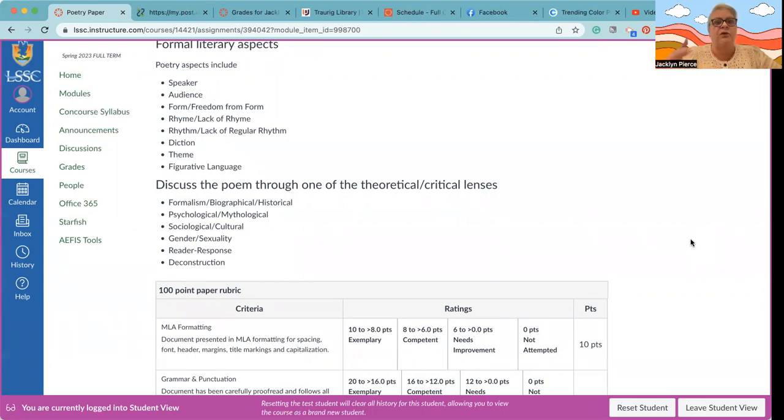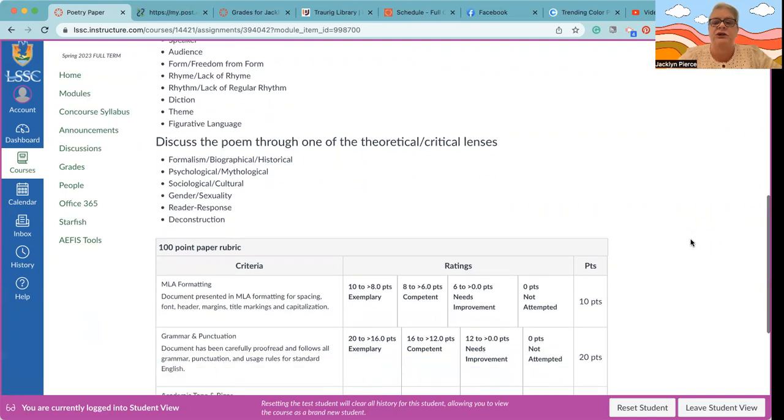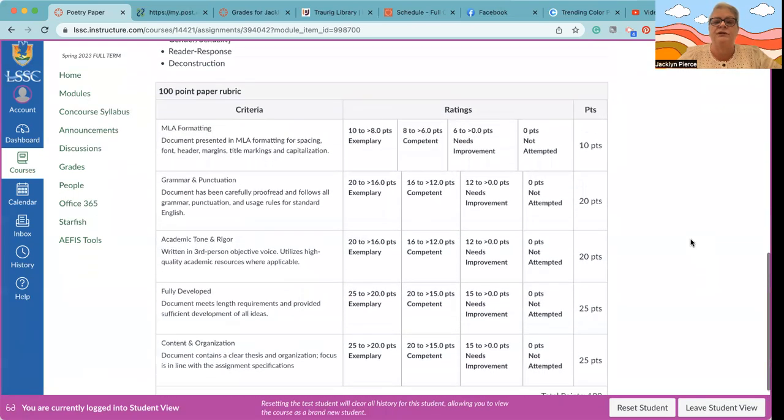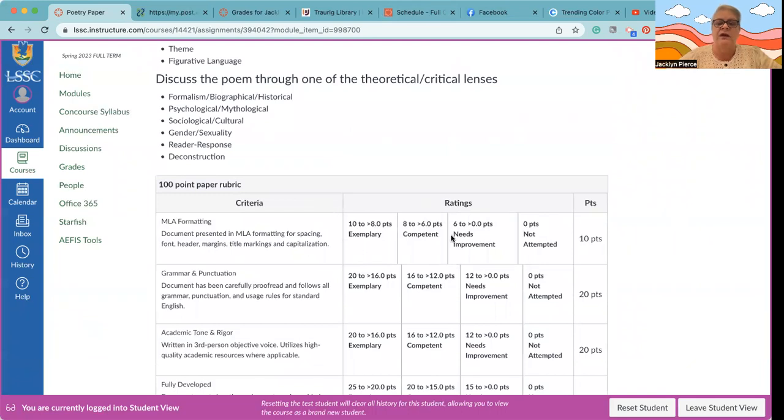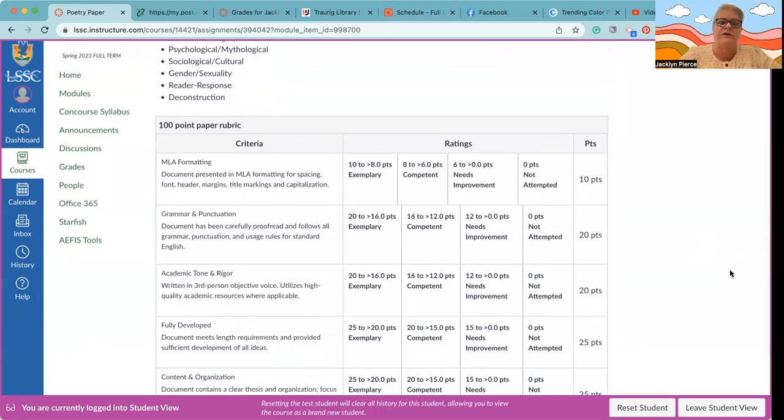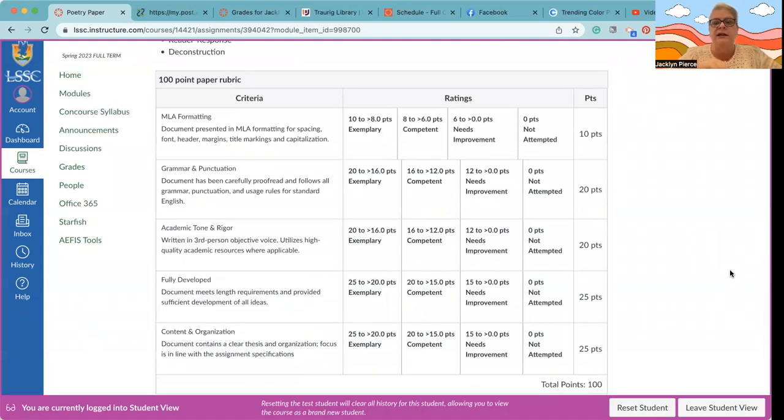And then of course you are also always welcome to interpret the poem through one of the theoretical or critical lenses that we've looked at, including the just kind of formal biographical, historical aspects. Remember that if the poem was written before the year 1900, the speaker and the poet are not the same person, at least not identical. We have psychological criticism, mythological, sociological and cultural, gender, sexuality, reader response, and deconstruction. Sometimes when you are looking at sources, you may find them already using one of those critical lenses, and so that will kind of send you in that direction.